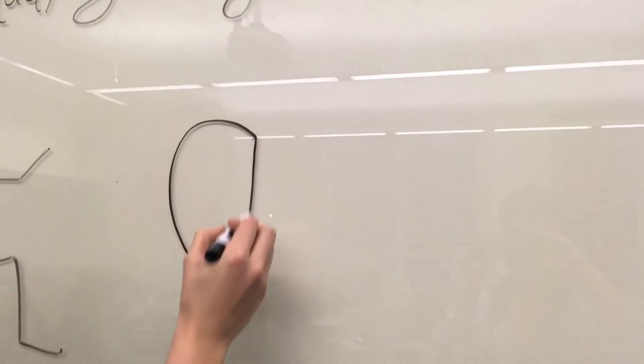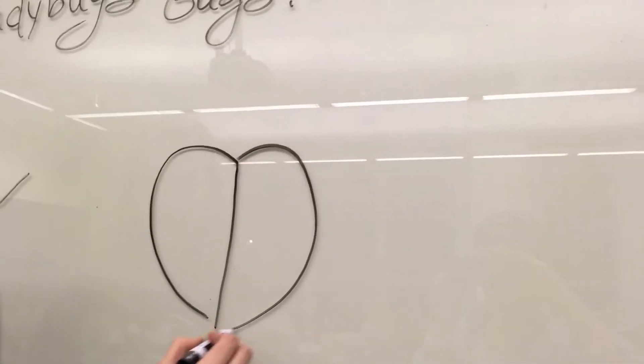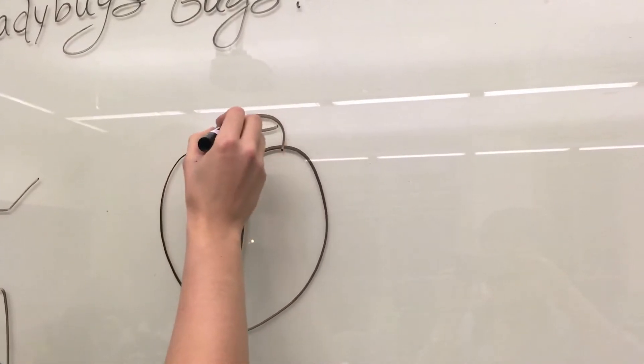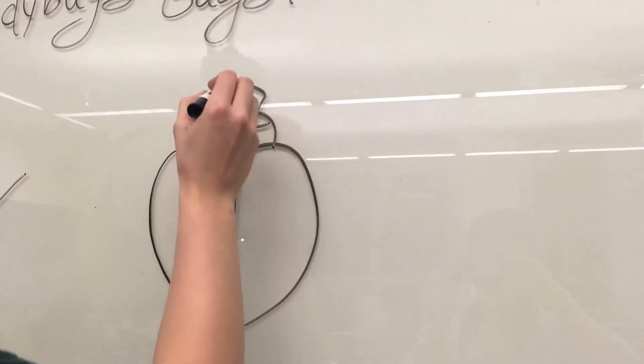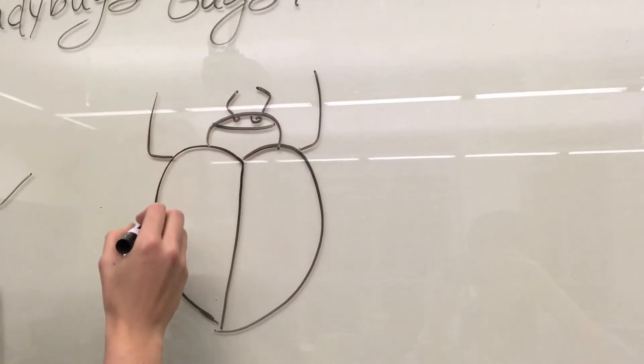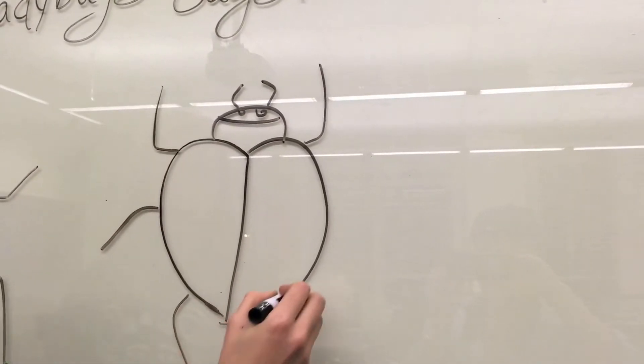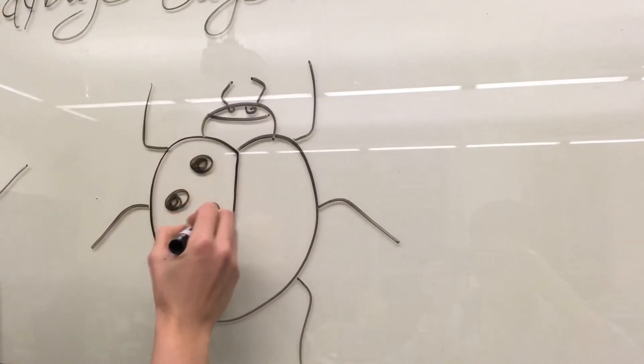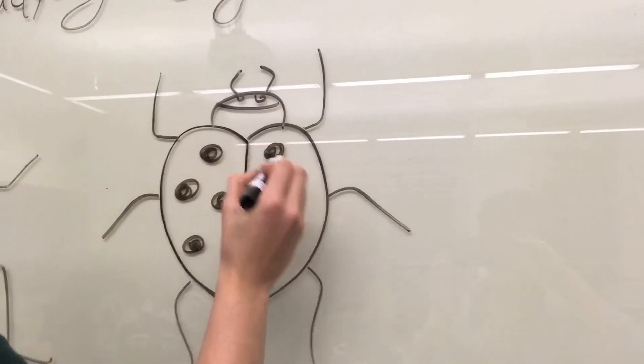Now let's take a look at a ladybug. A ladybug is an insect in the order Coleoptera. It, too, has a head, thorax, and abdomen, two antennae, and three pairs of legs. Now, the wings are a little bit different. A ladybug has a set of membranous wings under a fully hardened pair of elytra.